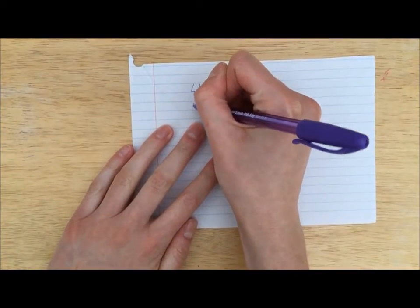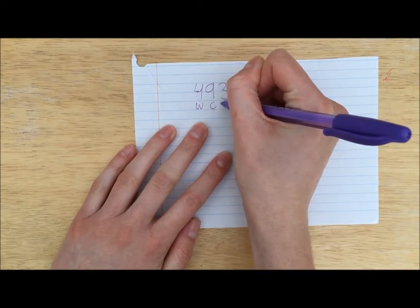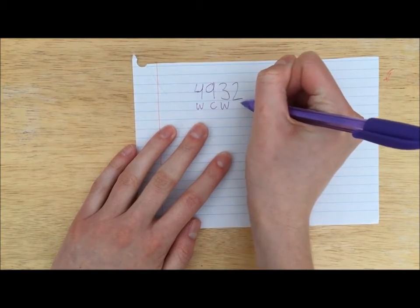So this is what I would say: You have a warm digit in the thousands place, a cold digit in the hundreds place, a warm digit in the tens place, and a cold digit in the ones place.